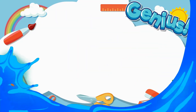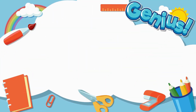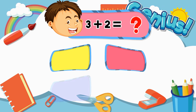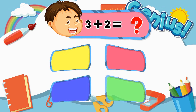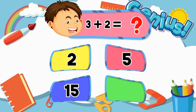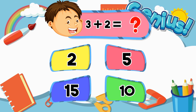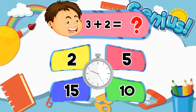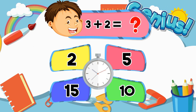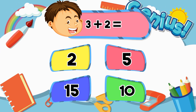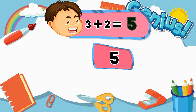What is three plus two? Options: Two, Five, Fifteen, Ten. Answer: Five.